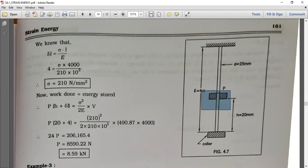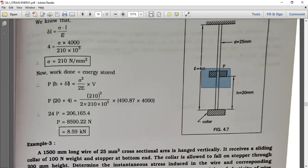Now work done equals energy stored. P times (h plus delta L) equals sigma square upon 2E times V. So P times (20 plus 4) equals 210 square divided by 2 times 210 times 10 raised to 3, times the volume of this bar, with length 4000 and area 490.87 mm square.